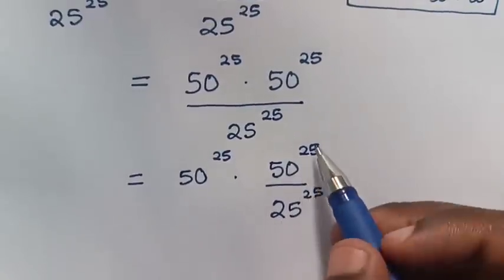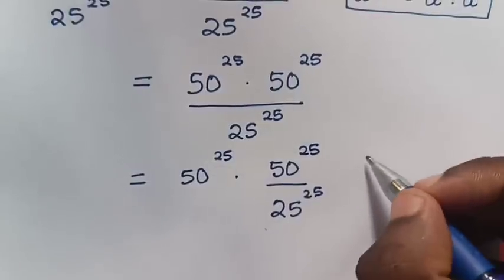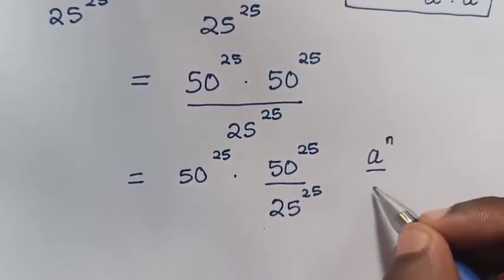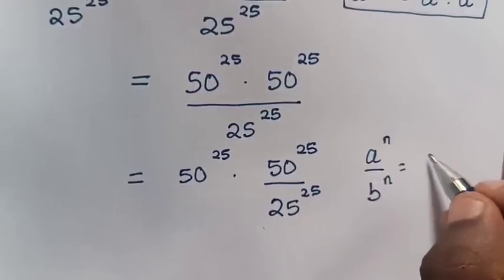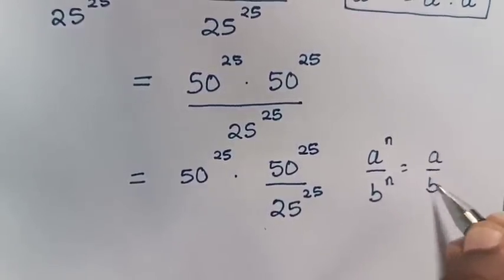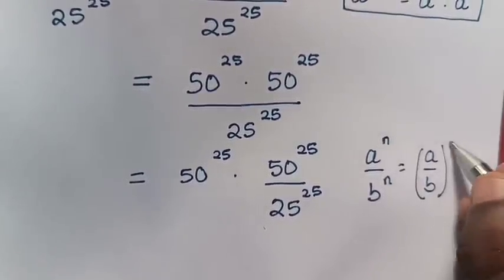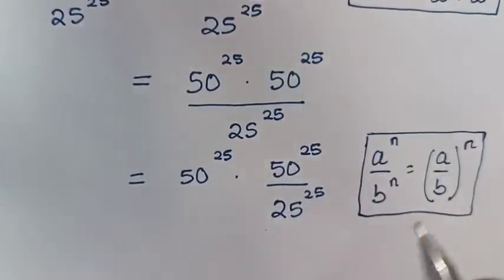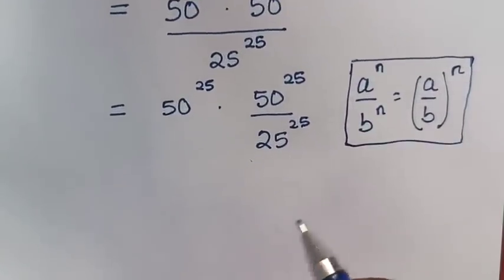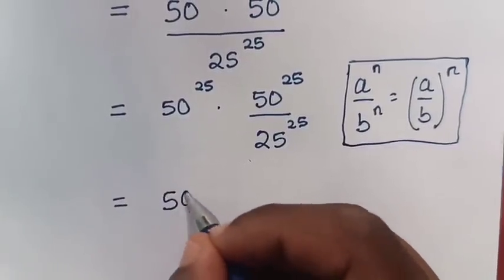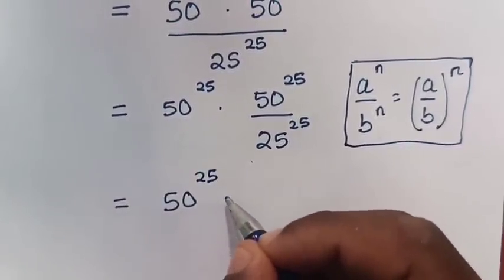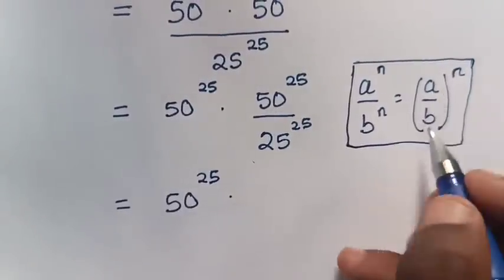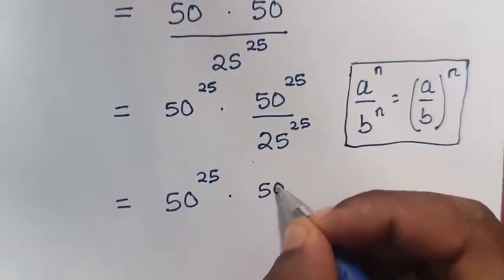Then from here, we'll apply the exponential rule that a power of n over b power of n is equal to a over b, bracket power of n. So here in our equation, it will be equal to 50 power of 25 times — this a divided by b — 50 divided by 25.